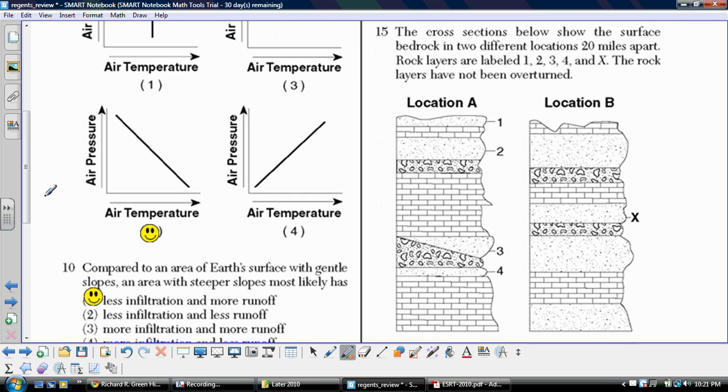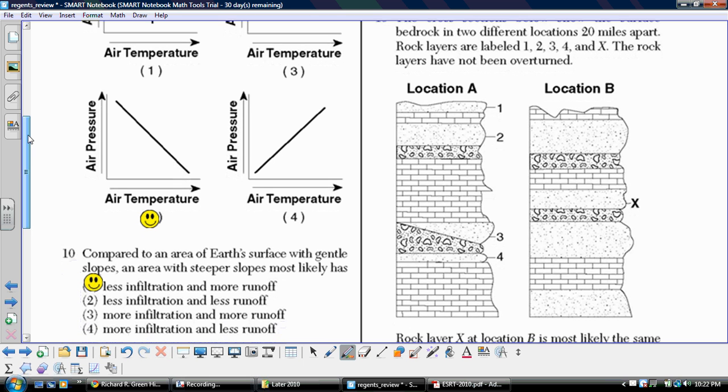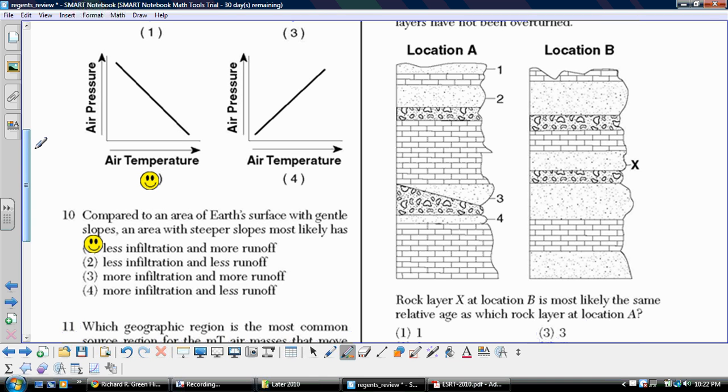Fifteen. We've got cross sections below showing the surface bedrock in two different locations, twenty miles apart. Rock layers are labeled one, two, three, four, and X. The rock layers have not been overturned. We're looking at all these layers relative to each other's locations. Layer X at location B is most likely the same relative age as which rock layer at location A. So we want to do some correlation of rock strata here and try to match up where we might be seeing some patterns. If we're looking, if these two were together, then we would have sandstone and then a layer of limestone on top. And that is the correct sequence, one, two, three, above this area.